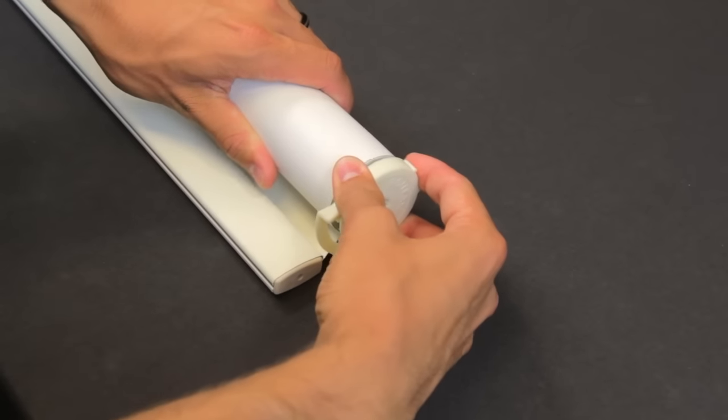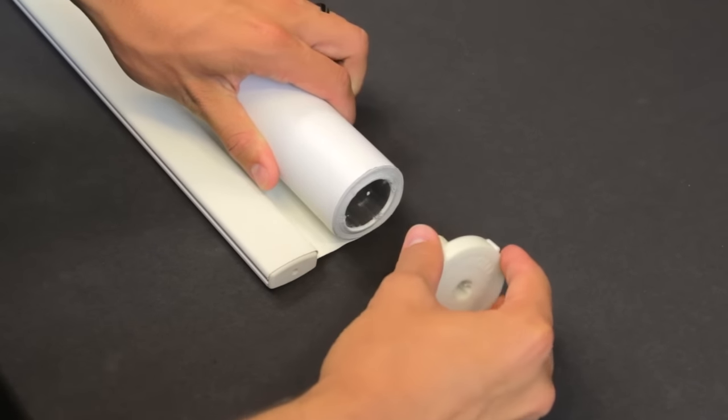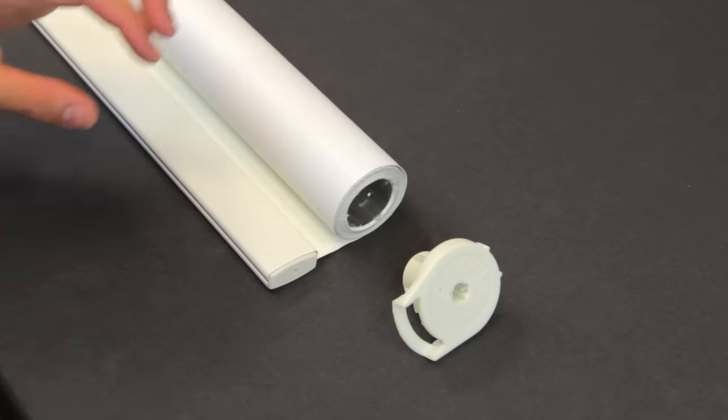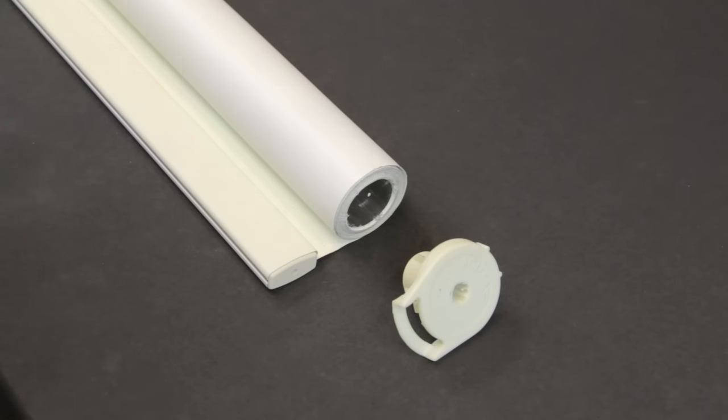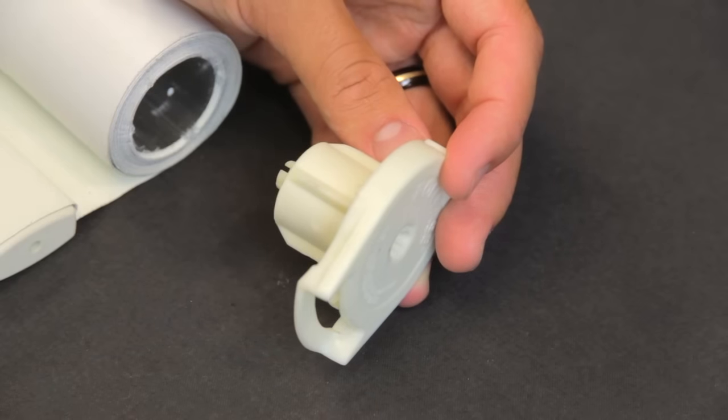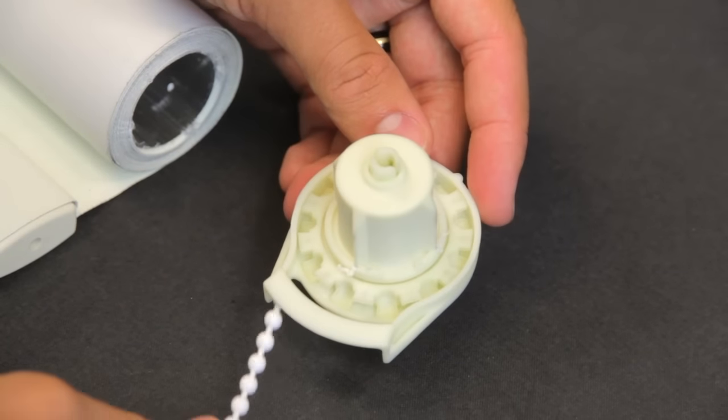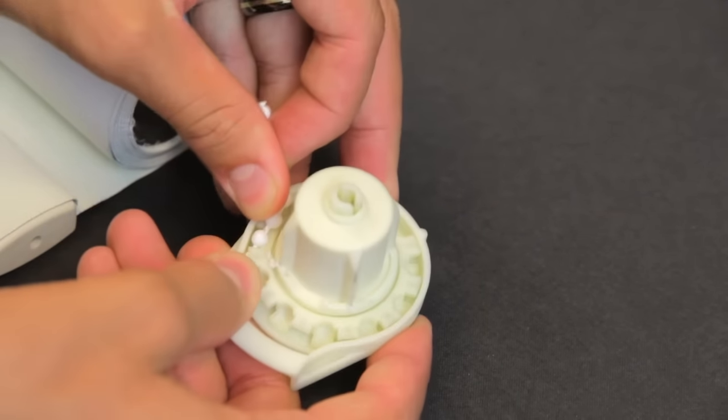Remove the clutch. Use a screwdriver to pry it off if necessary. Insert the chain into the cogs of the clutch and rotate it through as shown.